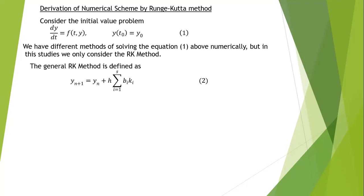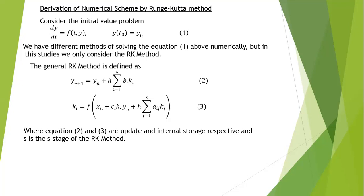The general Runge-Kutta method is defined as y_(m+1) equals y_m plus h times the summation from i equals 1 to s of b_i k_i, where k_i is defined as f of (t_n plus c_i h, y_n plus h times the summation from j equals 1 to s of a_ij k_j). Equations 2 and 3 above are the update and internal stage respectively, and s is the stage of the Runge-Kutta method.